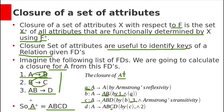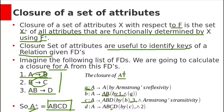A+ = {A, B, C, D}, meaning A can functionally determine all attributes within this relation. Since there are only four attributes and A can determine all of them, A is a candidate key. By using the closure of a set of attributes we can find all the candidate keys in a relation.